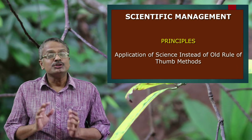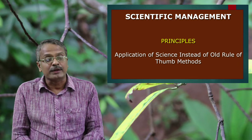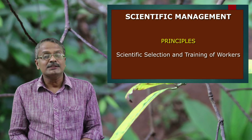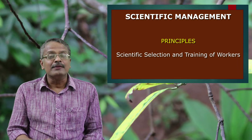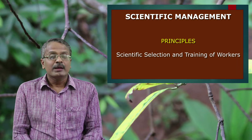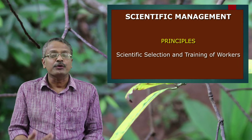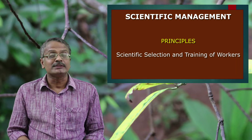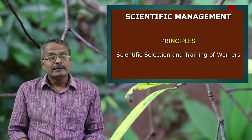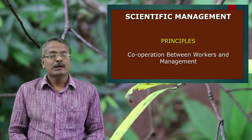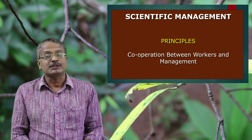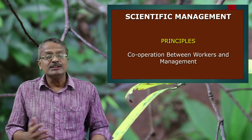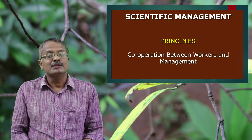The second principle is scientific selection and training of workers — selecting the most suitable workers for each work and giving them proper training to do it in the most effective way. Scientific selection means choosing workers with the skills and abilities required for the job. Taylor also thought about giving training to workers for using tools and equipment to maximize output. The third principle is cooperation between workers and management, underlining the necessity of maintaining harmony and minimizing discord in the organization.